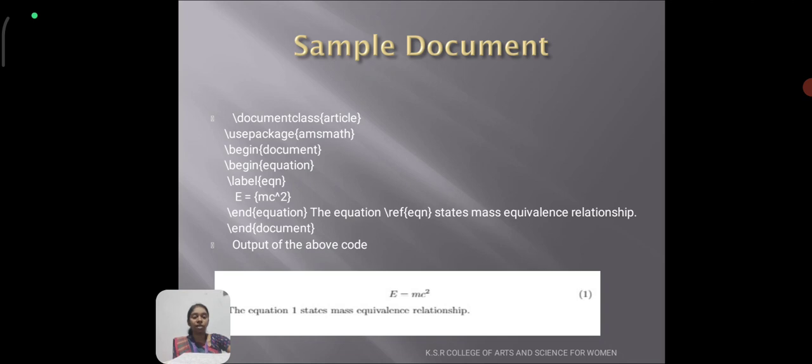The equation \ref{equation} states mass equivalence relationship. We include a labeling command as \label{eqn}. We can refer to the equation by its key \ref{equation} rather than its number.